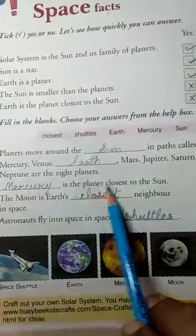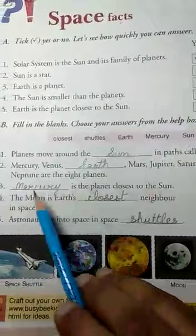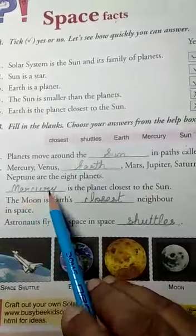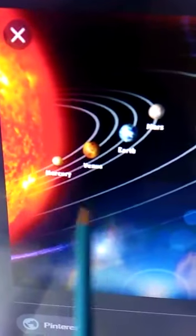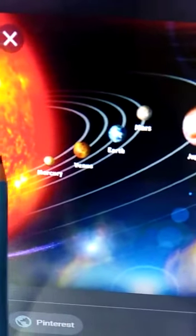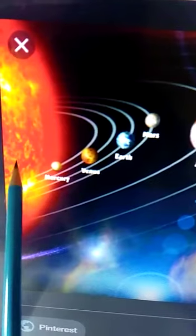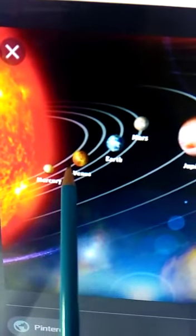Number three: Mercury is the planet closest to the sun. M-E-R-C-U-R-Y. Mercury is the planet which is closest to the sun. See in the diagram, this is the sun, this is Mercury. So Mercury is the planet which is closest to the sun. Earth comes in the third position after Venus.